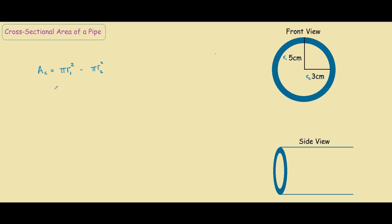So now we can factor out the π. So we have π times r1² minus r2². And this over here is the general formula for the cross sectional area of a pipe.